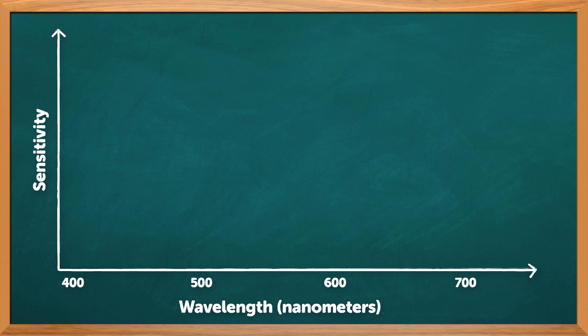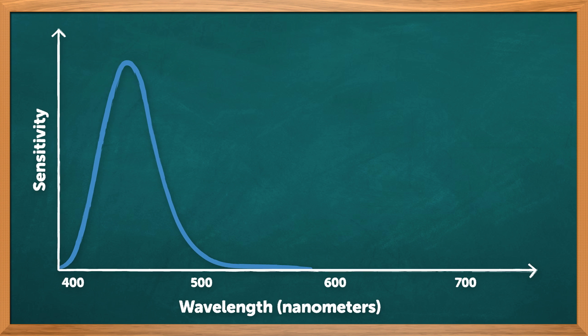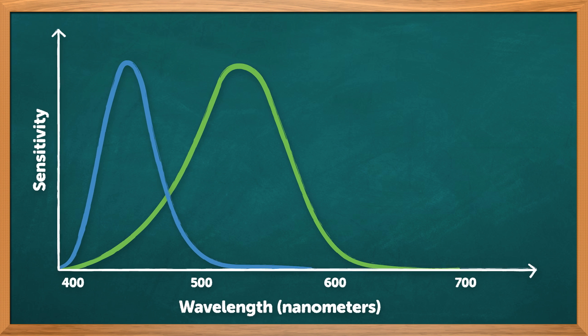So these three types of cones are attuned to short wavelengths, which picks up blues, medium wavelengths, which picks up greens, and long wavelengths, which is in the red band of the visible light spectrum.